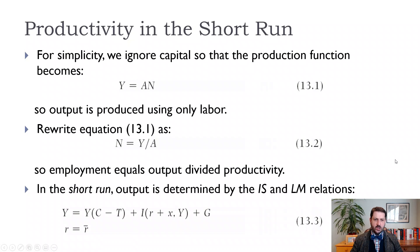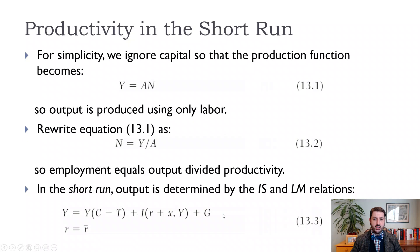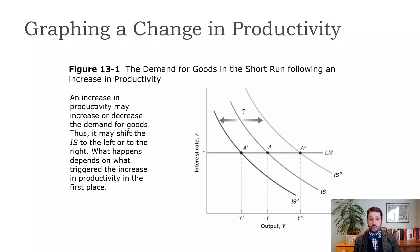In the short run, our model is the IS-LM model. Output is equal to the consumption function plus investment plus government spending, and LM is just the policy rate, which affects investment spending directly. The problem is this doesn't really tell us what's going to happen in the short run — we could have a decrease or an increase in demand from a change in productivity. It could be that we're increasing productivity because demand is higher, or that productivity increased via technology but people got laid off and therefore demand is lower because income is lower.